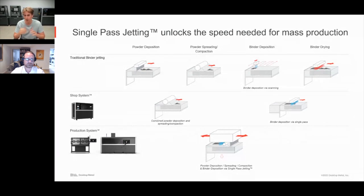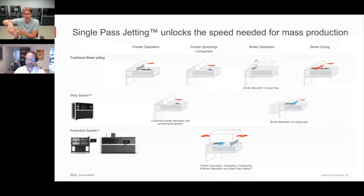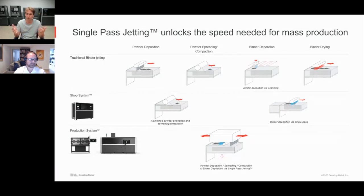The Production System takes all four steps and combines them into one. The large print head at the front constantly deposits a wave of metal powder, immediately compacted right behind it, with binder laid down immediately after. This system doesn't need a drying step. The print head is symmetric so it works in both directions — no wasted movement. The Production System can print an entire layer in about four seconds, allowing for very high-volume production.